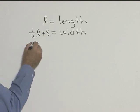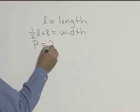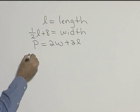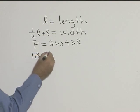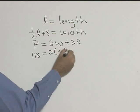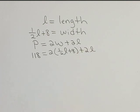They're asking us to find the perimeter, and the formula for perimeter is P equal to 2W plus 2L. So we know our perimeter was 118 is equal to 2 times the width, which was one half L plus 8, plus 2 times our length, which is L.